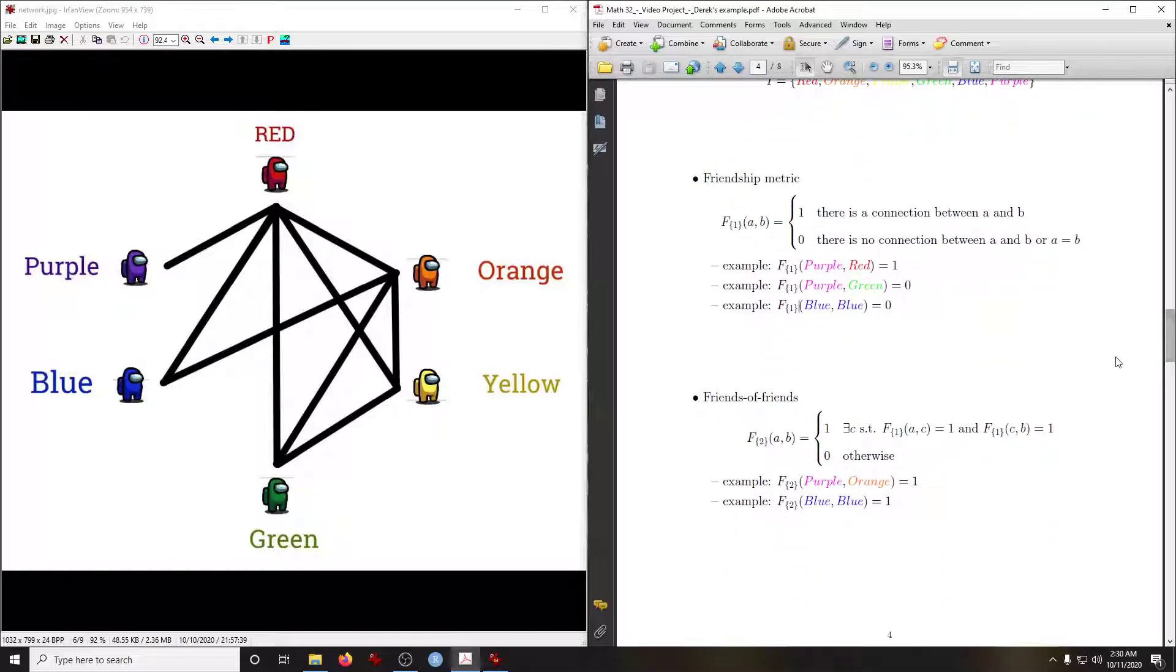Moving on to friends of friends, which is now two degrees of separation, we have a network theory definition. We could see in the graph that purple and orange are friends of friends with each other through red, so that has a value of one, even though purple and orange themselves are not immediately friends. There's a quirk in this definition that says that a person can be friends of friends with themselves. I used that definition in line with how social media networks are studied, and you can kind of guess where this calculation is headed.